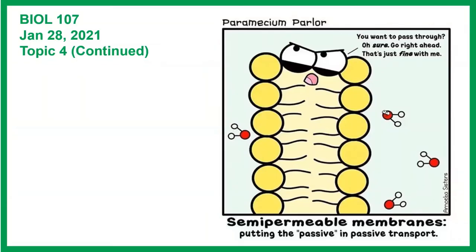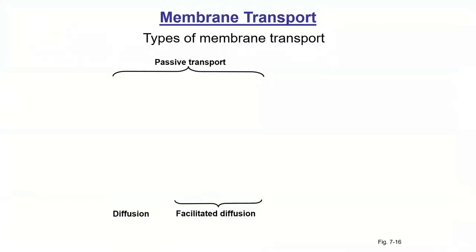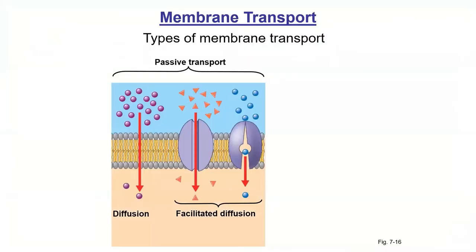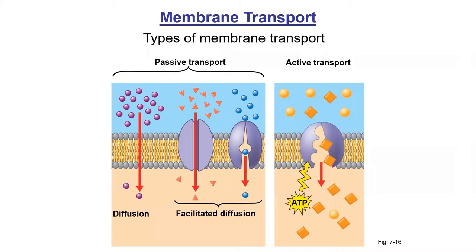Hi everyone. Today we're going to continue with topic four, which was on membranes and membrane transport. This is about where we finished off. We were talking about passive transport — so diffusion, osmosis, and facilitated transport — and we were also talking a little bit about active transport.